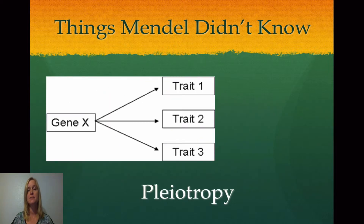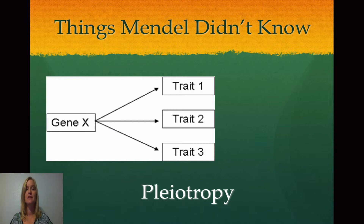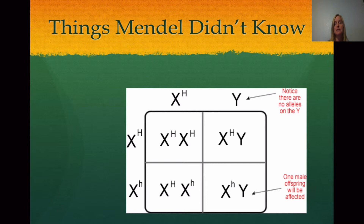Another thing Mendel didn't address is called pleiotropy, where one gene actually controls several different traits. Mendel didn't talk about this because his work was done before a lot of gene studies were completed. He knew that some factor was causing dominance and recessiveness, but he didn't really know about genes yet. Another situation Mendel didn't address is called sex-linked genes.